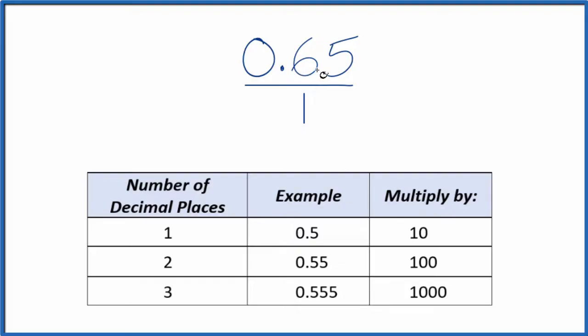What we need to do is get 0.65 to a whole number, and I can see I have two decimal places. So when you have two decimal places you can multiply it by 100. That'll give us a whole number.